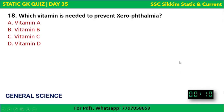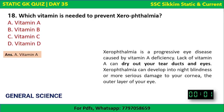Next question: which vitamin is needed to prevent xerophthalmia? Options: vitamin A, B, C, or D. The correct answer is vitamin A. Xerophthalmia is a progressive eye disease caused by vitamin A deficiency, which can dry out tear ducts and eyes, and can develop into night blindness or damage to the cornea.